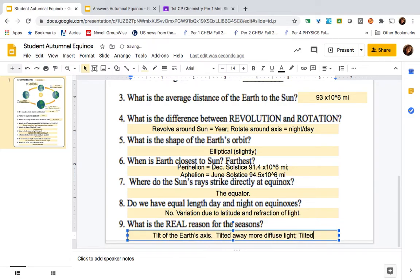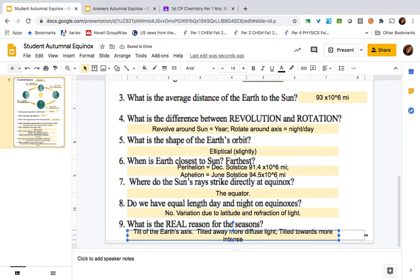Tilted towards is more intense light. And that makes it get warmer. And there's also a delay, of course, in maximum and minimum temperatures. They don't just happen instantaneously. It takes a while for the solid Earth to cool off or warm up.